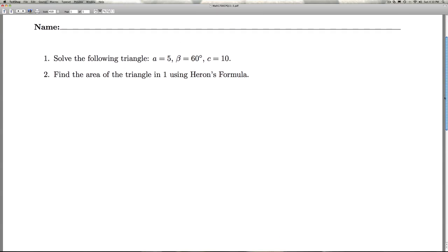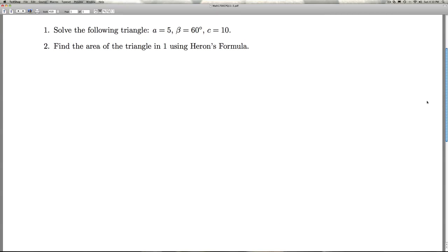Hi folks, this is Checkpoint Quiz 11.3. Number one, we're asked to solve a triangle if we're given A is 5, beta is 60 degrees, and C is 10.